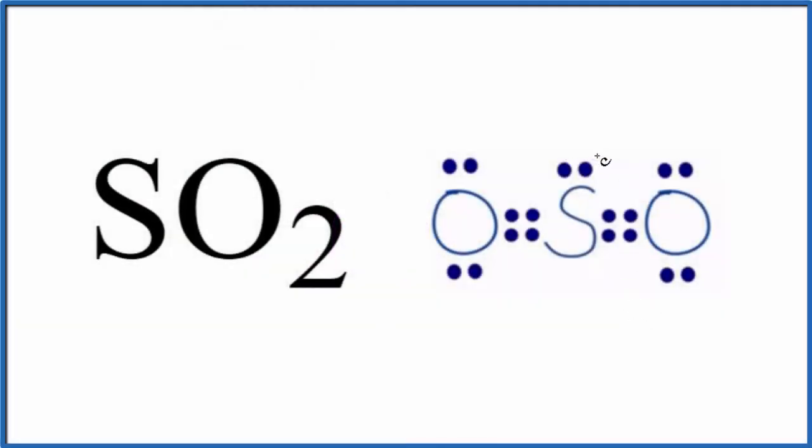Because we have this lone pair here pushing the oxygens down, we end up with this bent molecular geometry and we have bond angles of about 120 degrees.